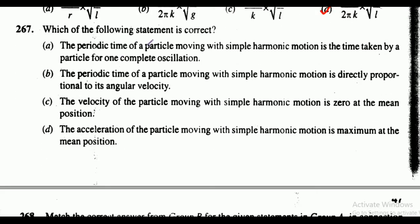Question 267: which of the following statements is correct? The first statement: the periodic time of a particle moving with SHM is the time taken by a particle for one complete oscillation. The second: periodic time is directly proportional to its angular velocity. The third: velocity is zero at the mean position. The fourth: acceleration is maximum at the mean position. The correct answer is option A — the first statement.